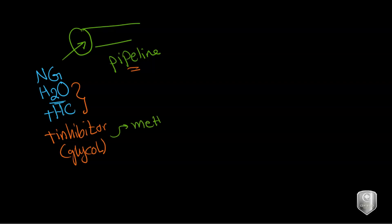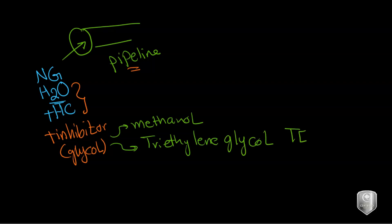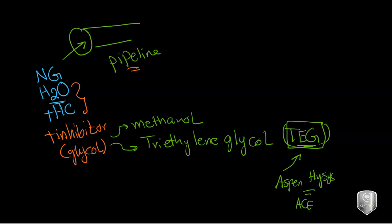Another hydrate inhibitor is methanol, which is the alcohol of methane. You can also have glycols like monoethanol and diethanol, but the most important one is triethylene glycol, known as TEG. TEG is used as an inhibitor in the Aspen HYSYS case study and is also the most commonly referenced one in the ACE exam. In the exam, TEG is added to the stream as an inhibitor to lower the hydrate formation temperature.